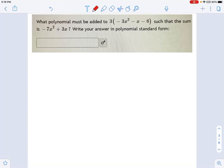We're told that a polynomial—I don't know what that polynomial is, we'll call it P—must be added to this expression, and the sum that it creates, in other words the result of the addition, is -7x² + 3x.